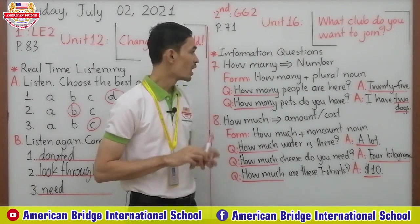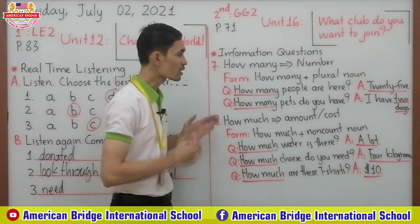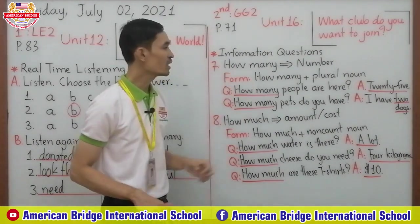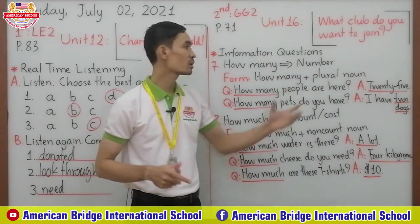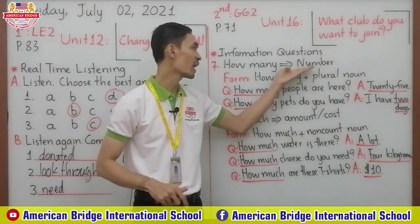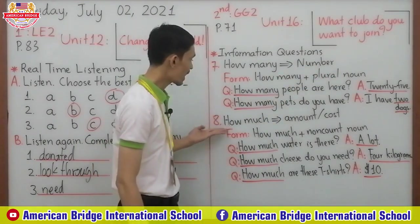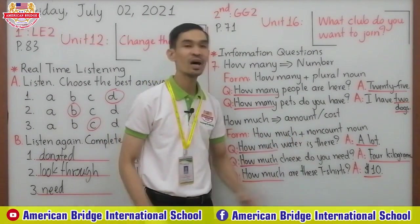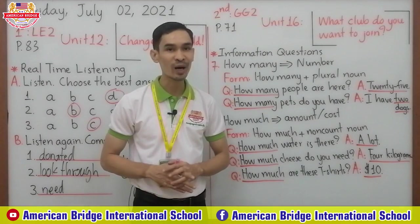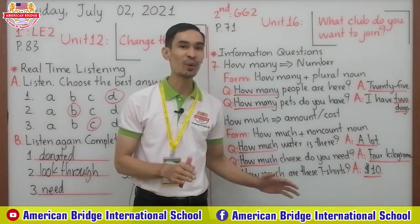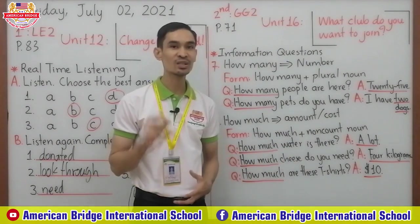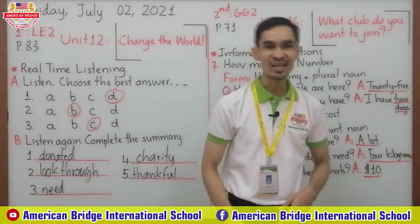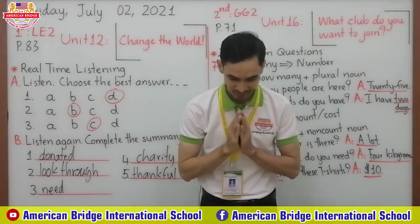Before we end our grammar lesson, let's review. 'How many' — you use it to ask for a number, and the form is how many + plural noun. 'How much' — you use it to ask for the amount or the cost, and the form is how much + non-count noun. You cannot say 'how much people' — that's wrong. Non-count noun means the noun you cannot count. This is the end of our video — see you in the next video, goodbye class!